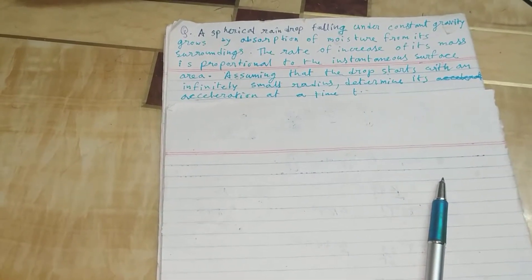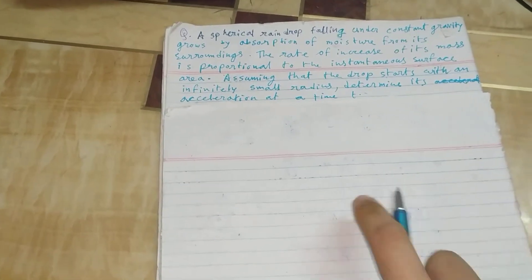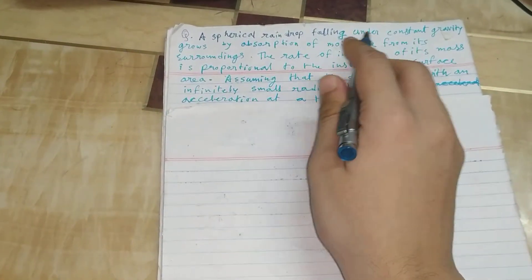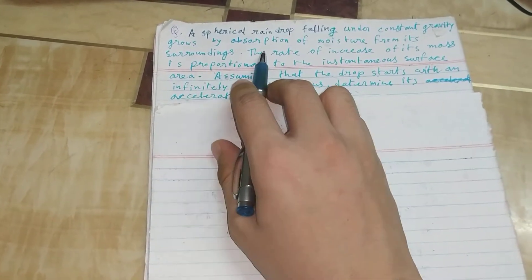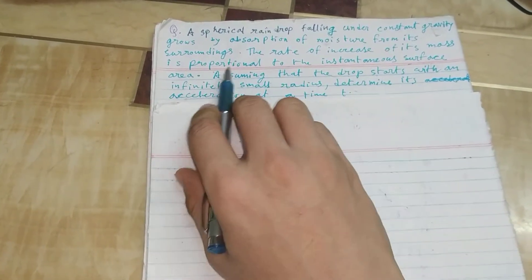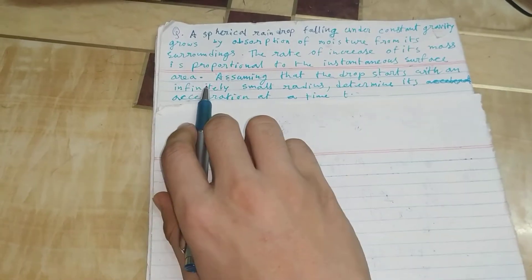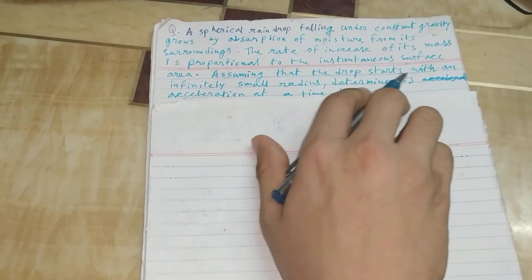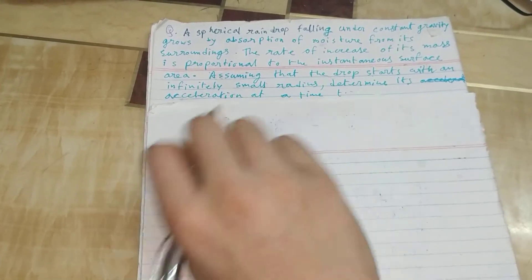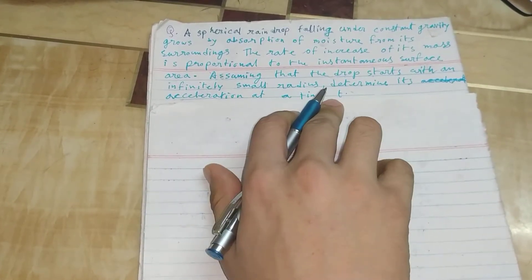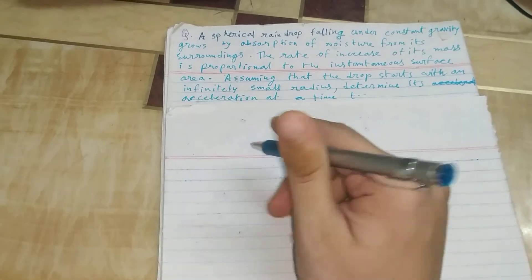Hi guys, today we're going to solve this problem: a spherical raindrop falling under constant gravity grows by absorption of moisture from its surroundings. The rate of increase of its mass is proportional to the instantaneous surface area. Assuming that the drop starts with an infinitely small radius, determine its acceleration at time t.